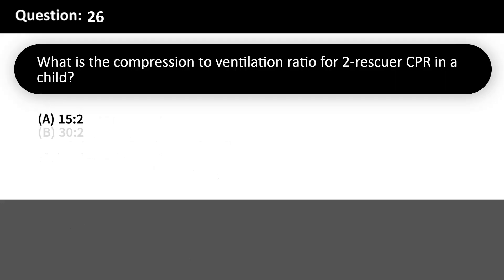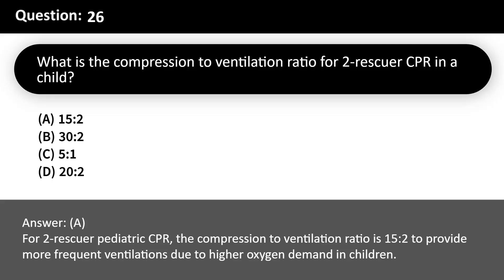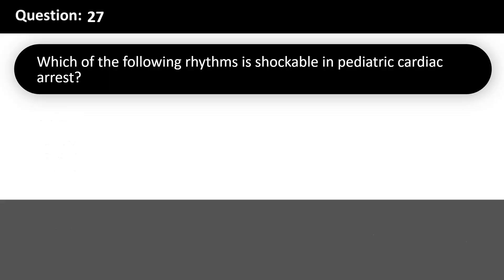What is the compression-to-ventilation ratio for two-rescuer CPR in a child? A. 15:2. B. 30:2. C. 5:1. D. 20:2. Answer: A. For two-rescuer pediatric CPR, the compression-to-ventilation ratio is 15:2 to provide more frequent ventilations due to higher oxygen demand in children.